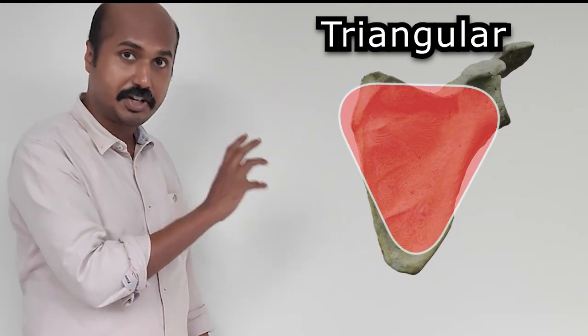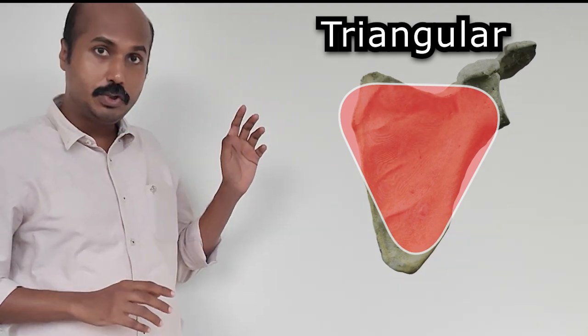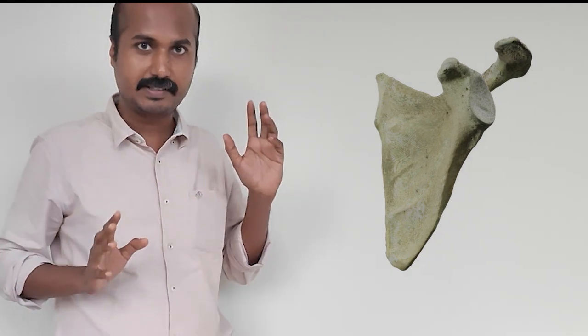So let us have a look at this bone. This is the scapula bone. As you can see, it is a triangular shaped bone and you have to identify first which is the upper and lower side of the scapula, the upper and lower parts of the scapula.